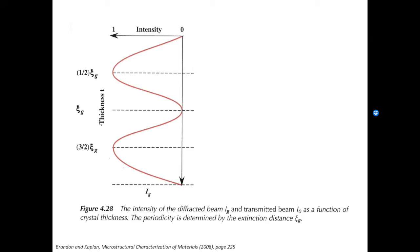Looking at the diffracted beam intensity profile as a function of thickness, it follows the sine-square curve. When t equals 0, there are two ways to look at it. First, there is no sample at all — no sample means no diffraction, so the diffracted beam intensity is zero. Second, t equals 0 represents the very top surface of the specimen, where no diffraction is occurring, so again the intensity is zero.